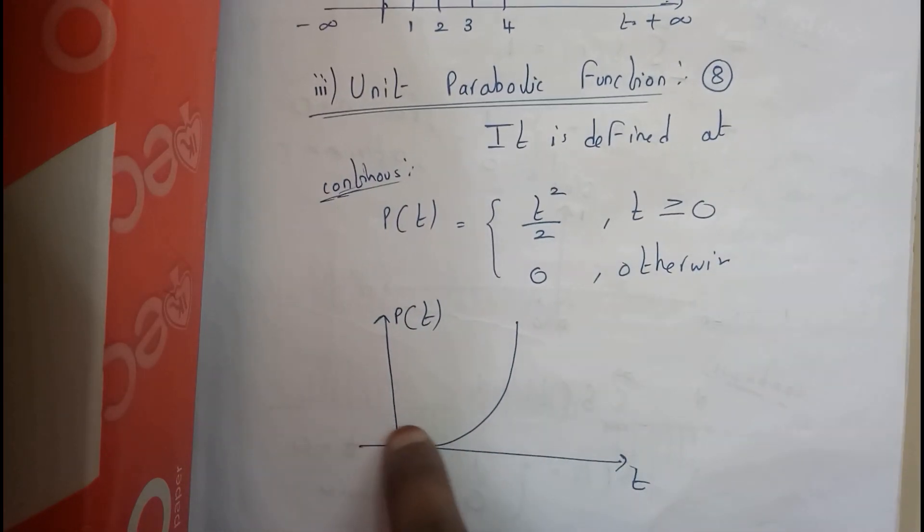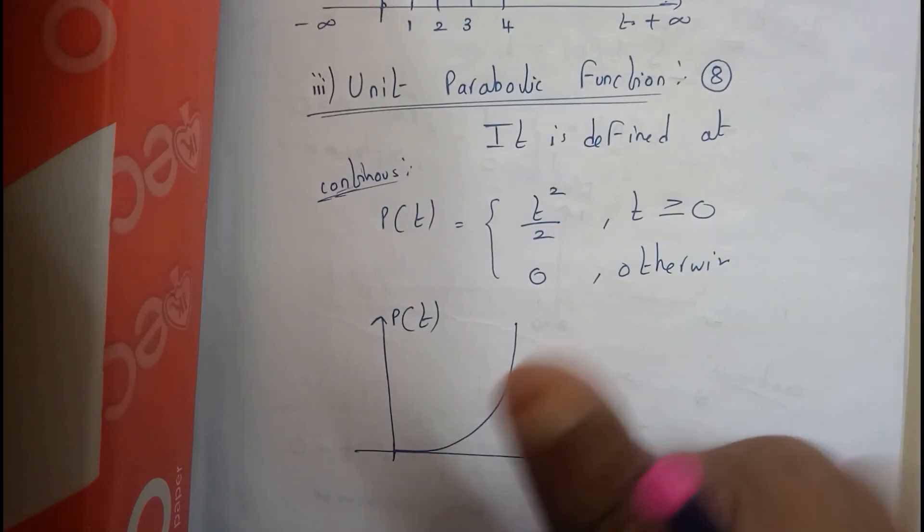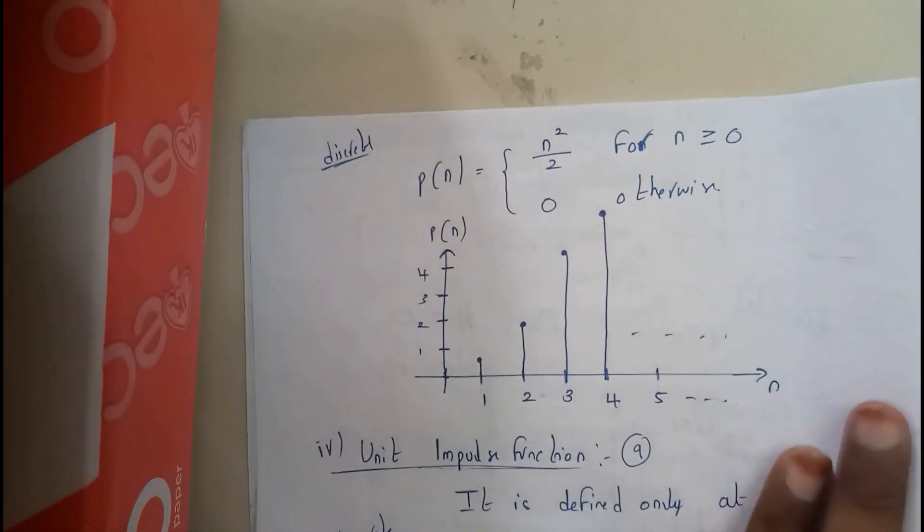The graph will be something like this. Now let us see the situation in discrete.